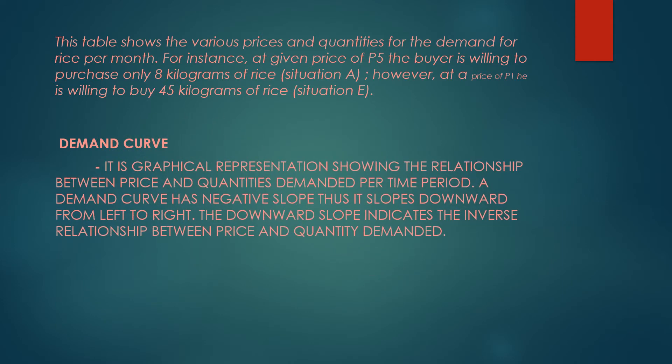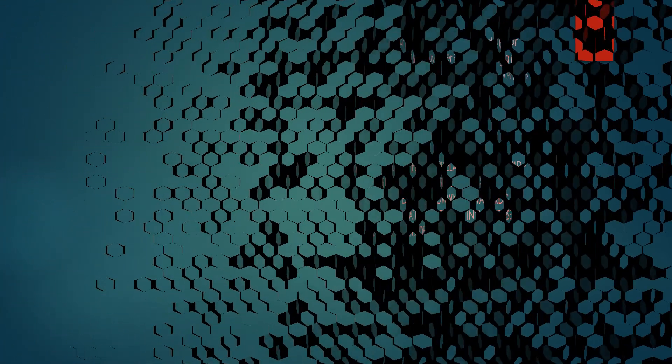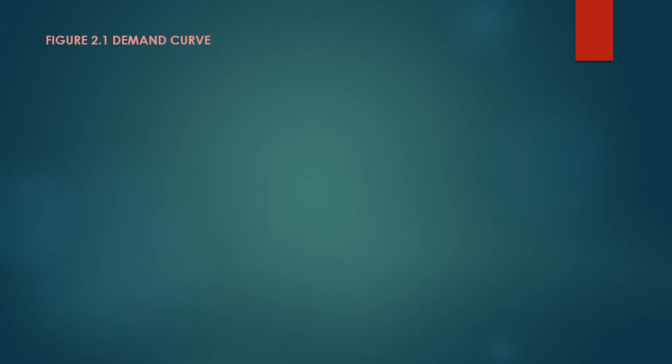It is a graphical presentation showing the relationship between the price and quantities demanded per time period. A demand curve has a negative slope, sloping downward from left to right. The downward slope indicates the inverse relationship between price and quantity demanded. This is shown in Table 2.1's demand curve figure.